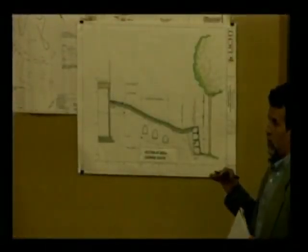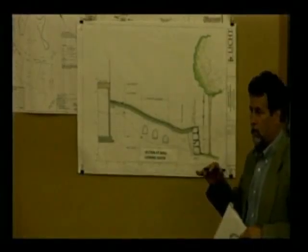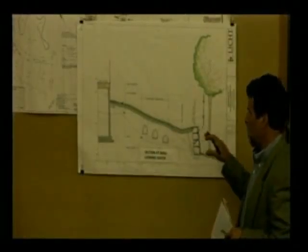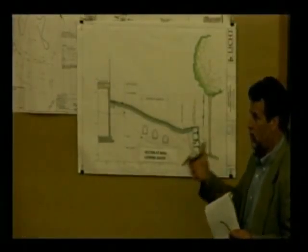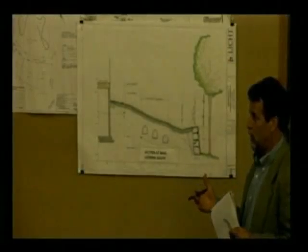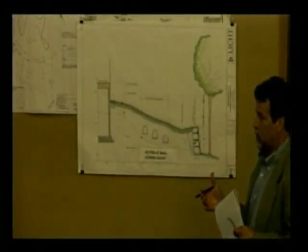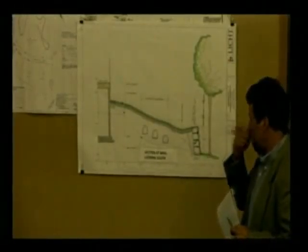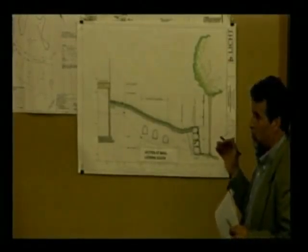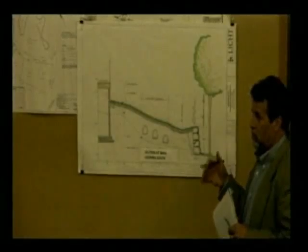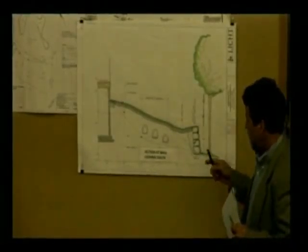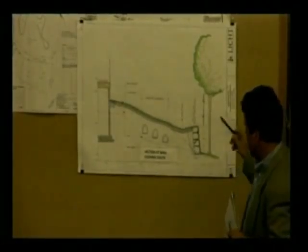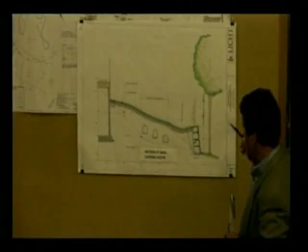The engineer offers to explain, noting that based on the site walk and discussions about the wall, plan views can be hard for people to understand. For the public hearing and presentation, it made sense to do a cross-section because it's easier to talk about the issues and what it would look like. He proceeds to show what the cross-section represents.